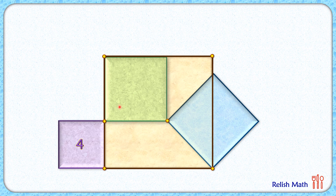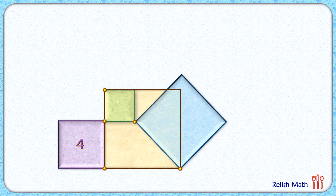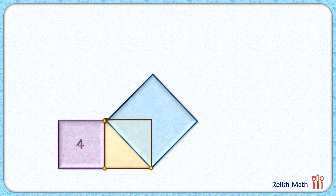How about if we keep the original conditions the same but reduce the size of the green square and the brown square? Again, all the original conditions are still met, and thus the area of the blue square should remain the same. How about if we reduce the green square to a point size? Believe it or not, we are still meeting all the original conditions of the question, and thus the area of the blue square should remain the same.